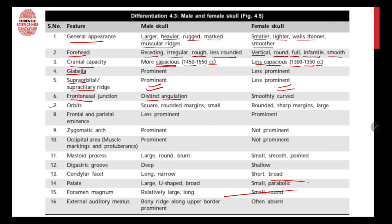The frontonasal junction has a distinct angulation in males and is smoothly curved in females. Regarding the orbits, in males they are square-shaped with rounded margins and smaller in size, whereas in females the margins are sharp, the overall shape is round, and the orbits are larger. So in males: square shape, rounded margins, smaller; in females: round shape, sharp margins, larger.